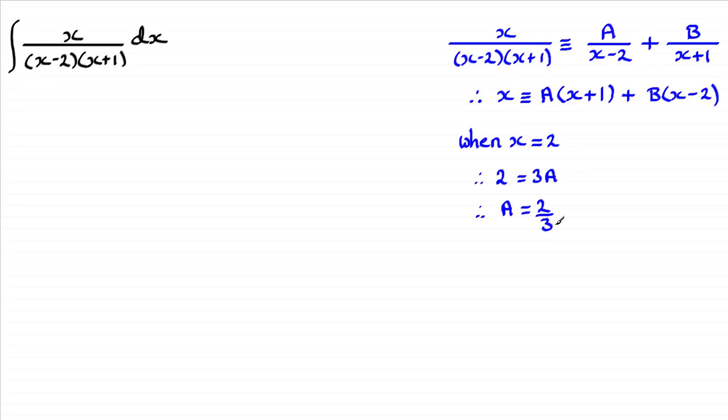And if we do much the same kind of thing to work out B, we make this bracket equal to zero by letting x equal negative 1. And if you do that, then when x is negative 1, you're going to have -1 here. This bracket is going to be 0. And then you're left with B times negative 3, so -3B. And rearranging that, B equals 1/3.